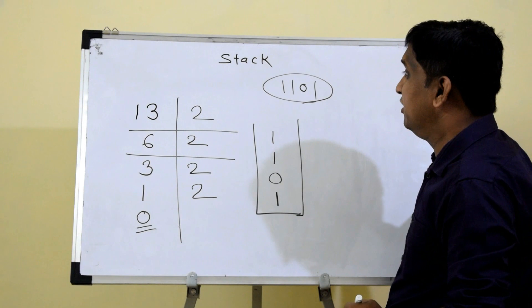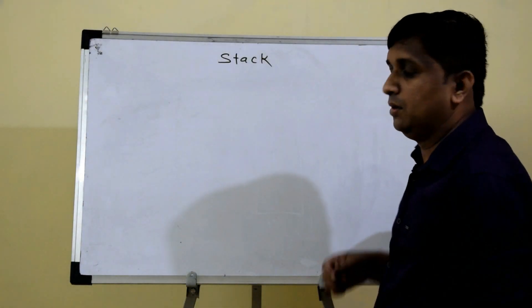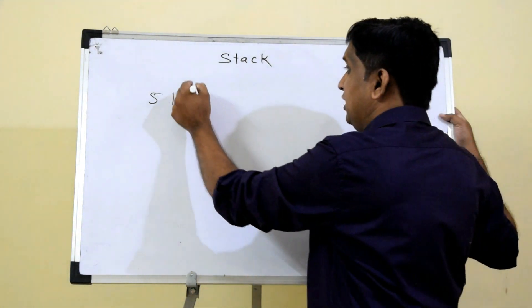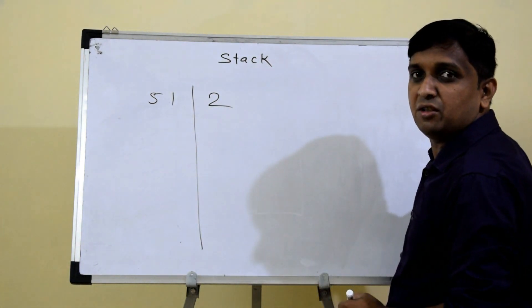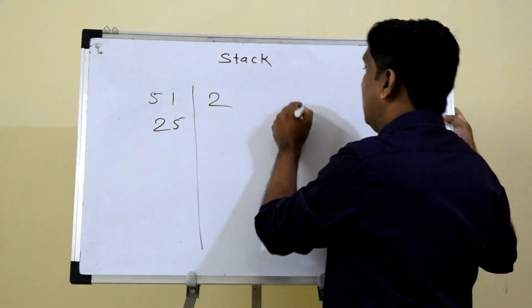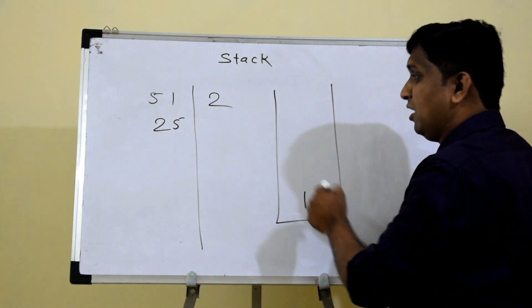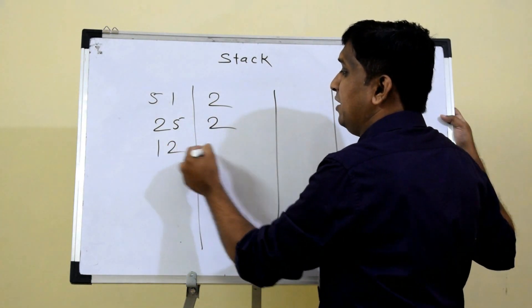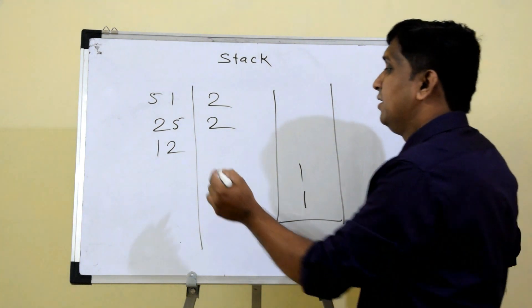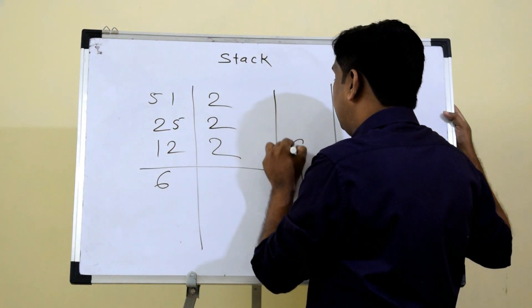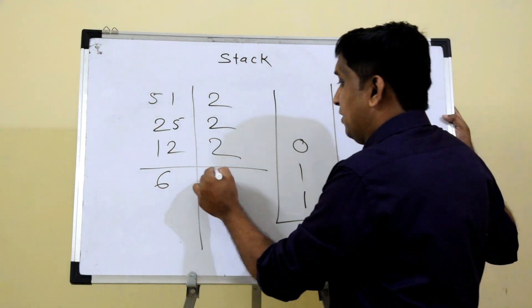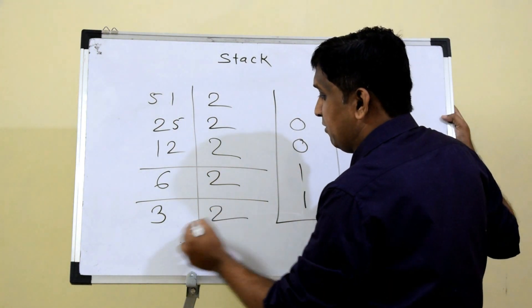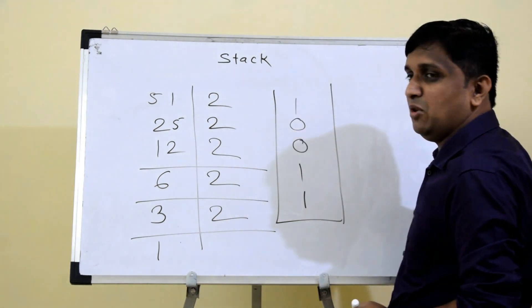Let's take one more example. Suppose 51 is the number to convert. Divide 51 by 2: quotient 25, remainder 1 — push onto stack. Divide 25 by 2: quotient 12, remainder 1. Divide 12 by 2: quotient 6, remainder 0. Divide 6 by 2: quotient 3, remainder 0. Divide 3 by 2: quotient 1, remainder 1 — push onto stack.